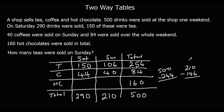Hot chocolates on Sunday: we have a total of 210 for Sunday, and 106 teas plus 40 coffees is 146, so Sunday hot chocolates is 210 minus 146, which is 64. Then Saturday hot chocolates: 160 take away 64 — 160 take away 60 is 100, take away another 4 is 96. The question asks how many teas were sold on Sunday — the answer is 106.